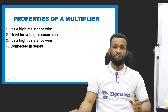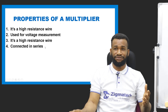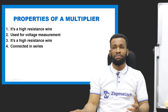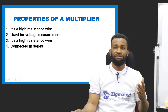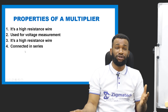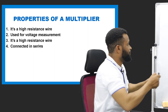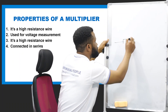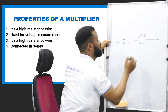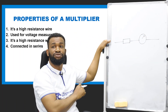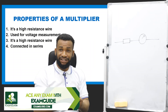What are the properties of the multiplier? Number one, it has to be a very high resistance. Number two, it is used for measuring voltage — you cannot use this multiplier to measure current, it must be for voltage. And number three, it must be connected in series with the galvanometer, just like this. When they are connected in series, you now have a multiplier. Many questions will ask: how do you connect a multiplier, and how do you connect a shunt? That is your answer.